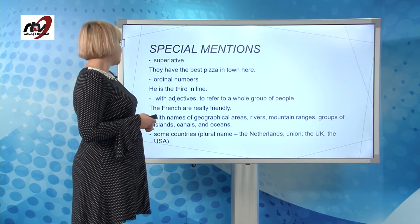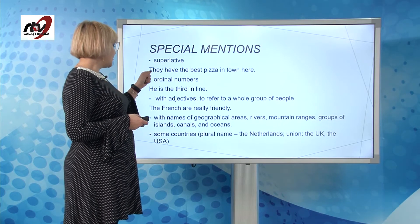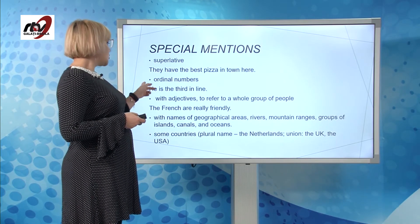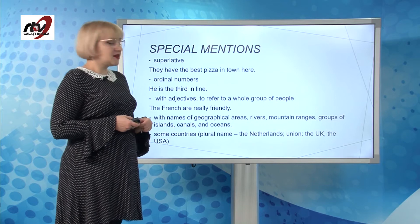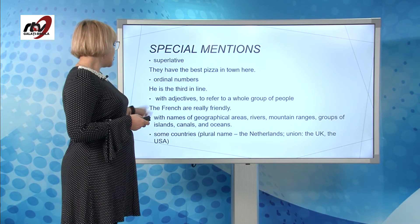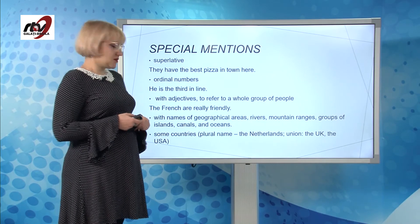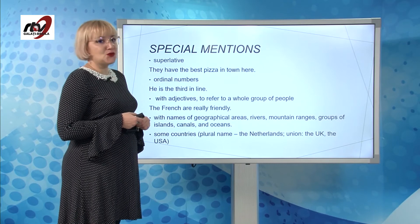A few special mentions. The definite article is used for superlatives, ordinal numbers, and with adjectives to refer to a whole group of people. It is also used with names of geographical areas like rivers, mountains, groups of islands, canals and oceans. And some countries — like the ones which appear in the plural, like the Netherlands — or the ones which form a union, like the United Kingdom and the USA.